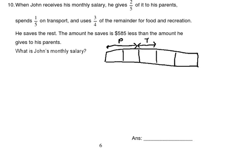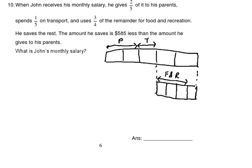From the remainder, I draw a pull-down model and cut it into four boxes. Three-quarters of the remainder is spent on food and recreation. I now have two boxes in the main model and four boxes in the sub-model, so I must equalize them using the lowest common multiple.